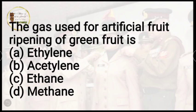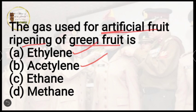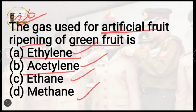Question number 26: the gas used for artificial fruit ripening of green fruit is — ethylene, acetylene, ethane, or methane? For example, during mango season, sellers pick unripe fruits and ripen them artificially to bring them to market first. The correct answer is option A, ethylene. Acetylene is also used but ethylene is more commonly used.